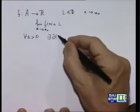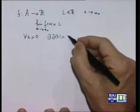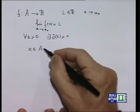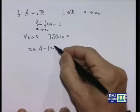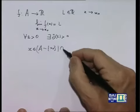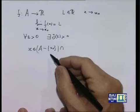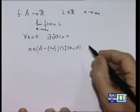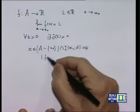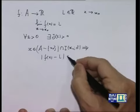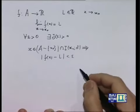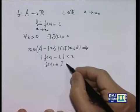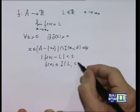Esiste un delta maggiore di 0 tale che per tutti gli x che appartengono ad A, sono diversi da x₀, e contemporaneamente distano da x₀ stesso meno di delta — dunque appartengono all'intorno di centro x₀ e raggio delta — per tutti questi x accade che il valore assoluto di f(x) meno l è inferiore a epsilon, il che equivale a dire che i valori che la funzione f assume appartengono all'intorno di centro L e raggio epsilon.